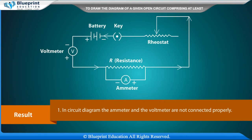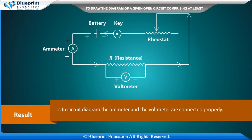Results: In the first circuit diagram, the ammeter and the voltmeter are not connected properly. In the corrected circuit diagram, the ammeter and the voltmeter are connected properly.